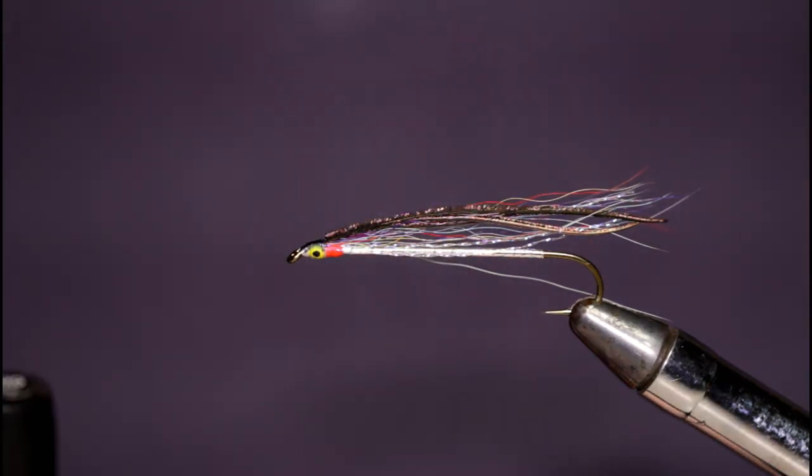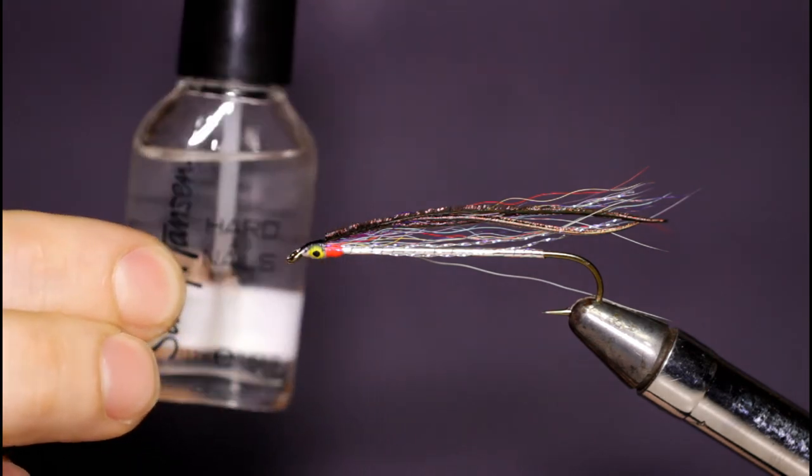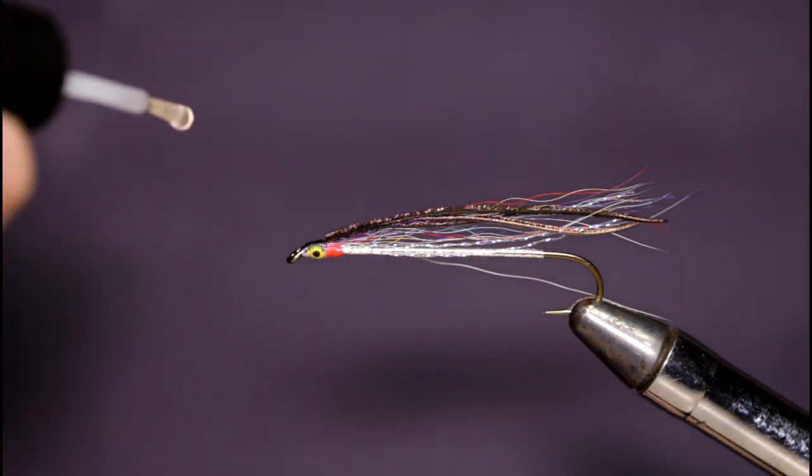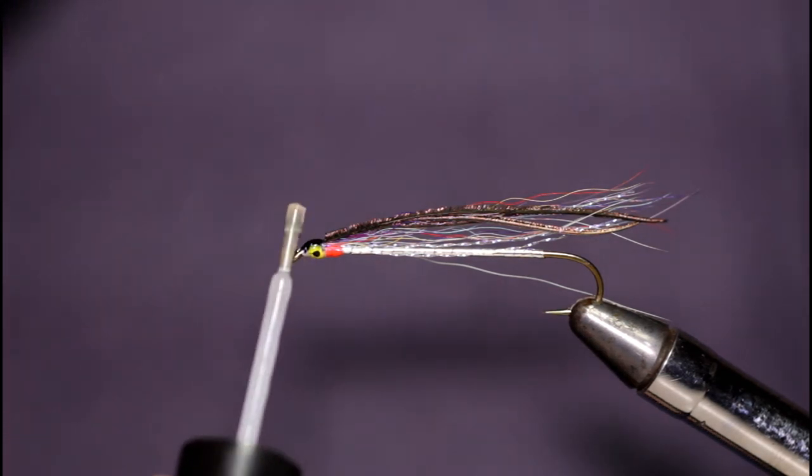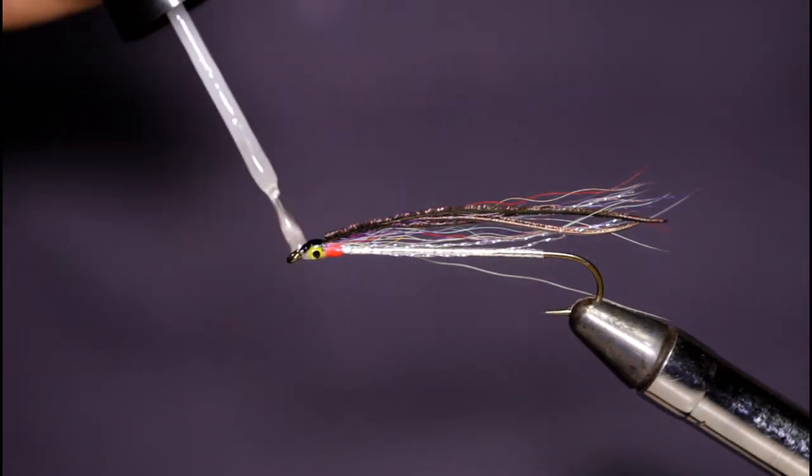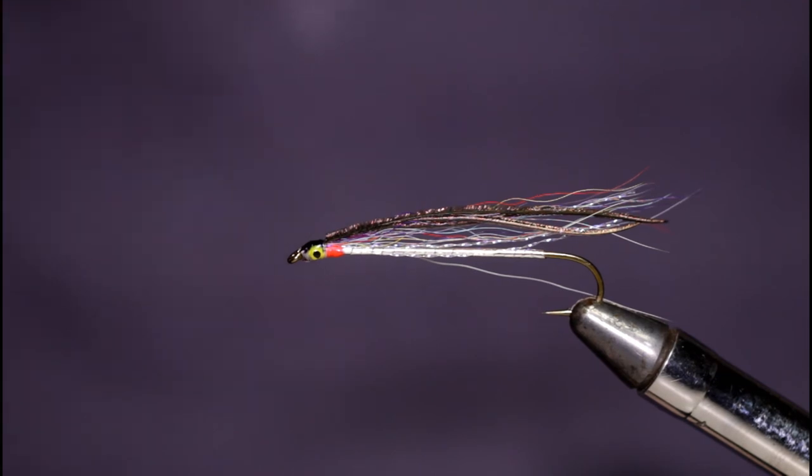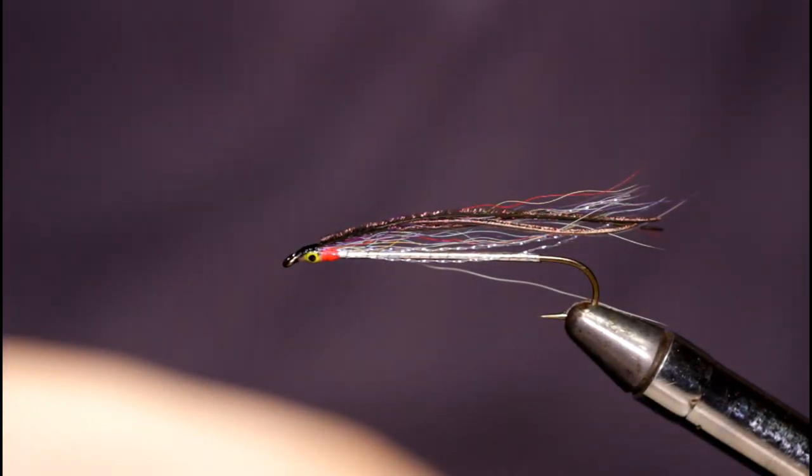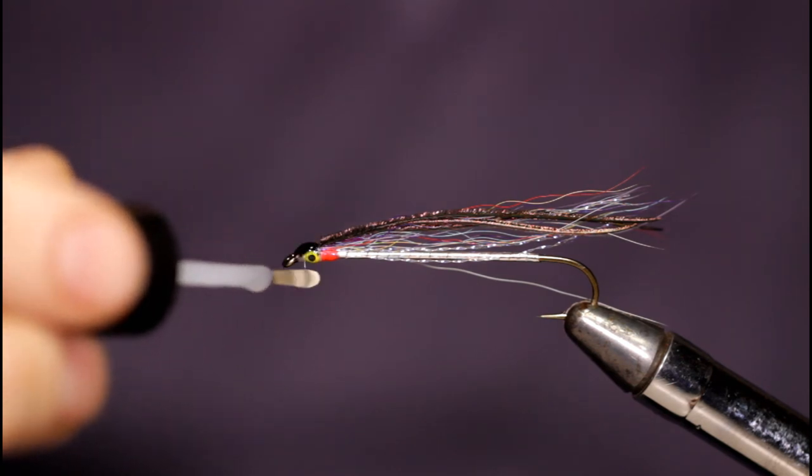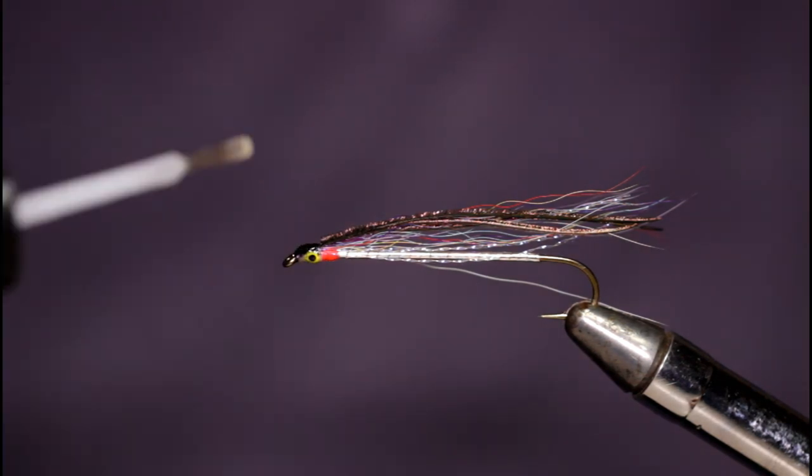The only step left is to finish your head with some sort of cement, polish, or lacquer. Here I'm using Sally Hansen's Hard as Nails. I'm going to put a coat on and let this dry. That first coat of Sally Hansen's has dried, here comes the second application.